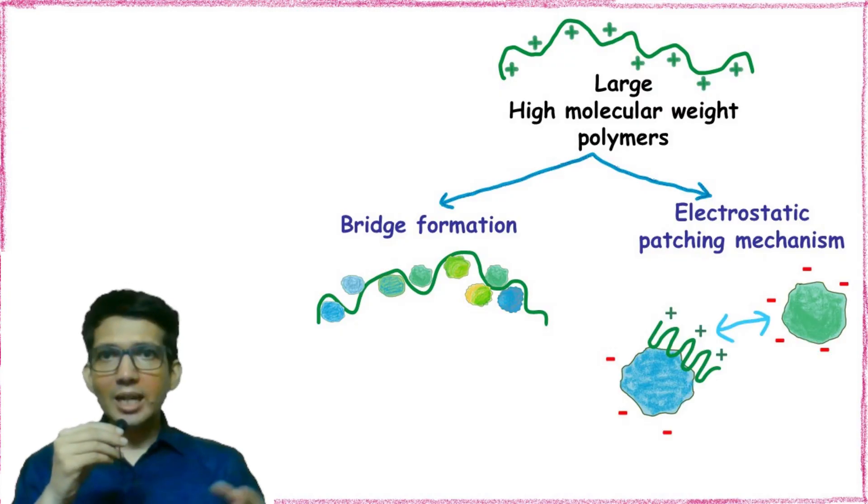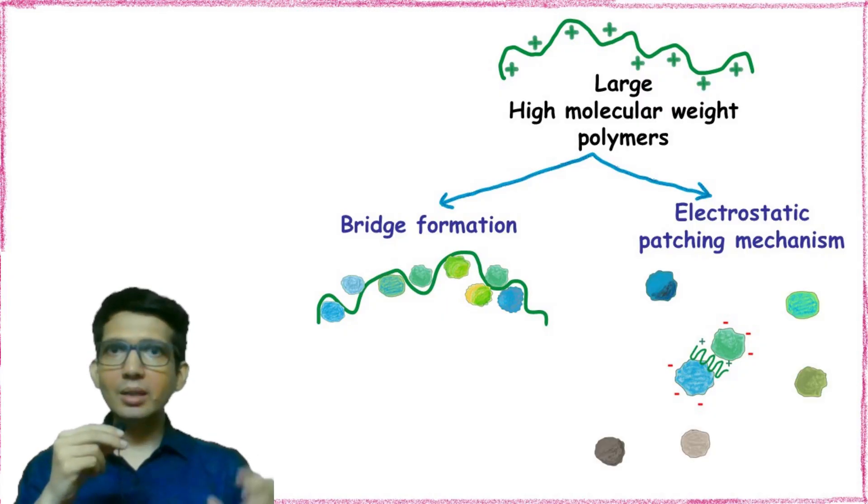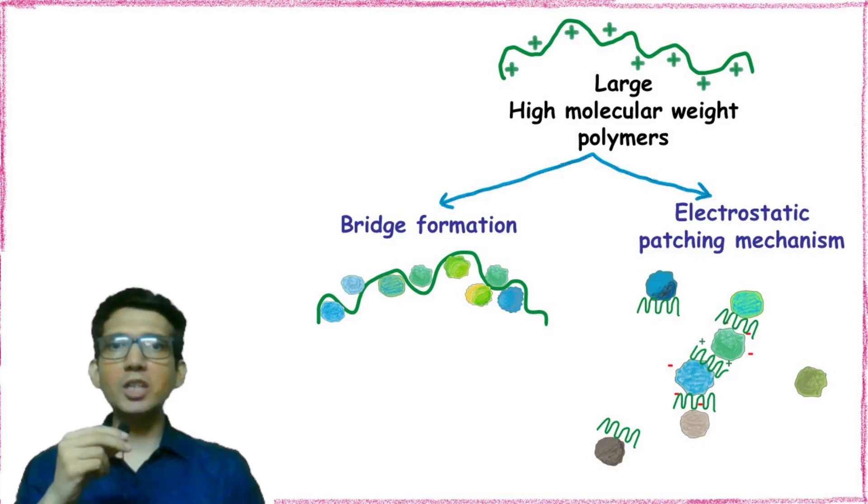In electrostatic patching mechanism, the polymer binds a small portion of the particle. This binding neutralizes the charge on the particle. Now the polymer bound with the particle attracts the other particle because of opposite charge. This phenomenon keeps on repeating until it results in formation of large flocks which easily settle down.